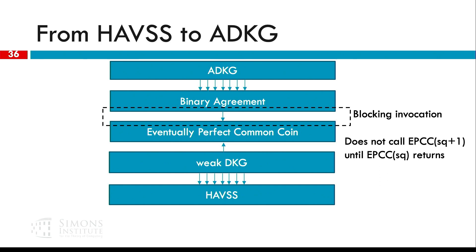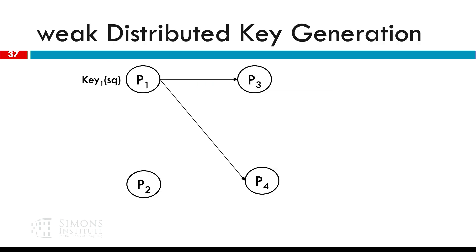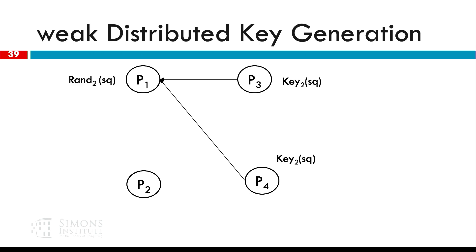WDKG feeds the eventual perfect common coin, which is basically a threshold signature protocol. In order for that to work, we need a blocking call on the agreement protocol — if a party is going to invoke a common coin for sequence number SQ, it's not going to invoke SQ plus 1 until that returns, which is basically what binary agreement does when it uses common coins. How the eventual perfect common coin works is similar to WDKG: you get a prediction and sign the sequence number. If you haven't terminated, you get a better prediction and sign that too. You wait to collect matching predictions and generate the random value.